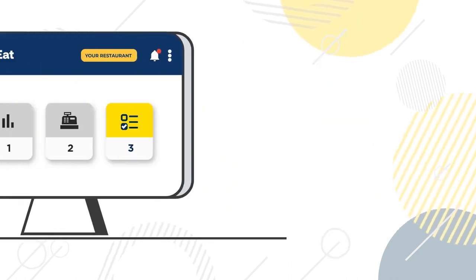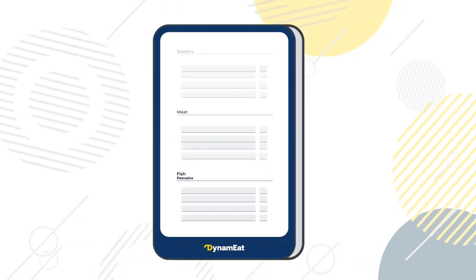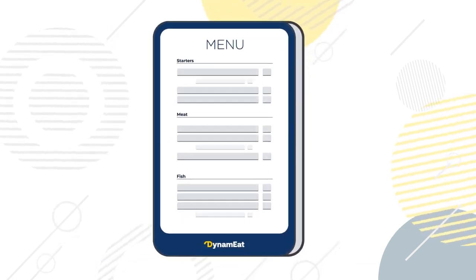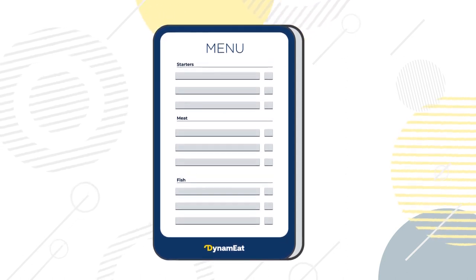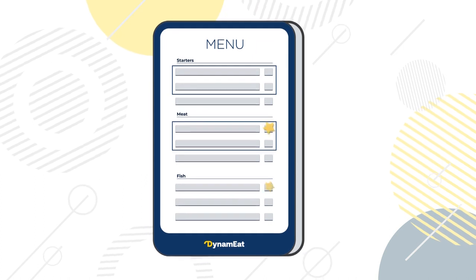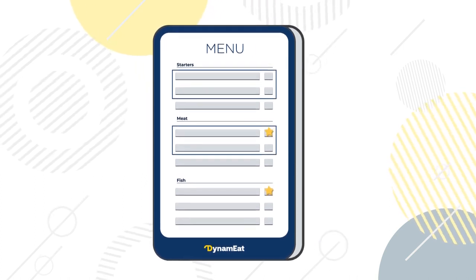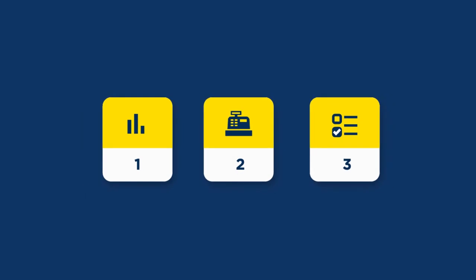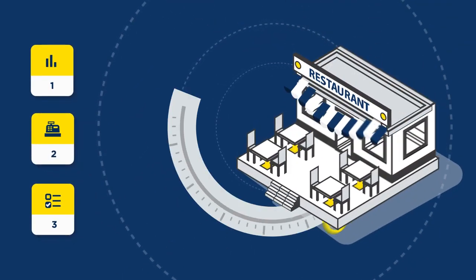Finally, our system makes a recommendation on the optimal configuration of the menu. Dynameat suggests which dishes you should show, in what order, and which ones you should highlight to increase sales, in the same way that Amazon does during the purchase process. During each of these three steps, you always have the last decision, providing the know-how of the business.